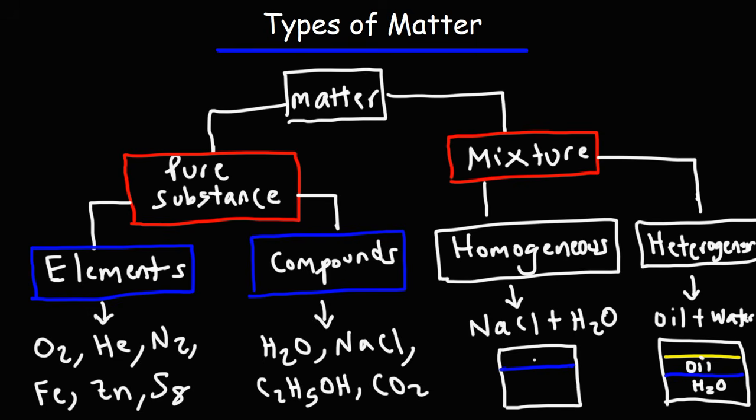Another example of a homogeneous mixture is air. Air, brass, a metal alloy, those are homogeneous mixtures. So air is a mixture of gases. Air is composed of oxygen gas, nitrogen gas, you might see some argon gas, and you might have water and carbon dioxide. But these are mixed uniformly throughout each other. And that makes air a homogeneous mixture.